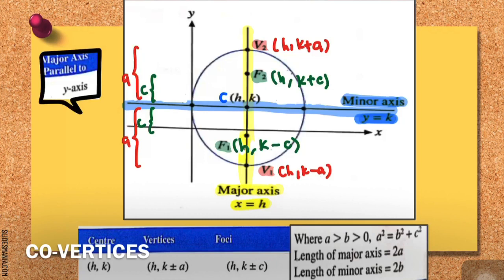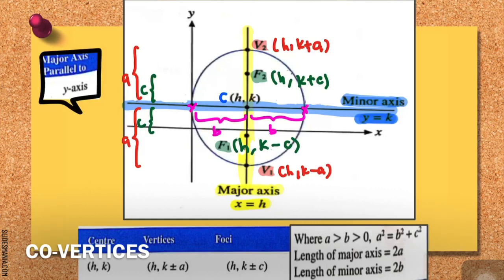The final component to look into is the coordinate of your co-vertices. The co-vertices are the two points where your ellipse cuts through your minor axis. The distance between your center and each co-vertex is b, so from center to the left co-vertex is b and from center to the right co-vertex is also b.